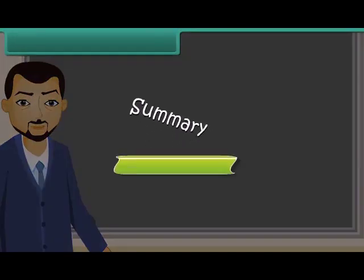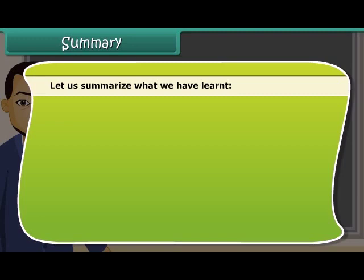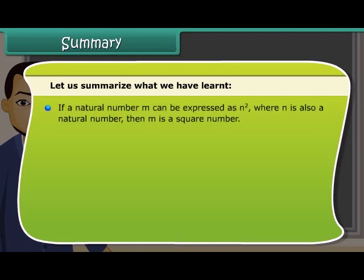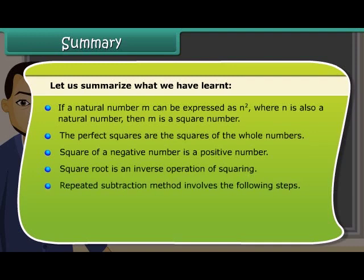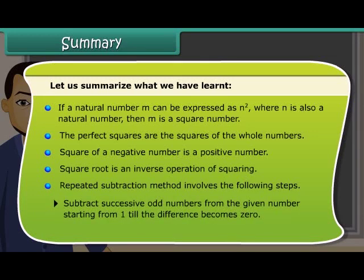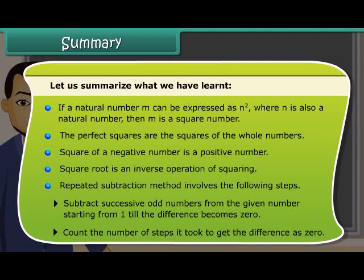Summary. Let us summarize what we have learned. If a natural number M can be expressed as N square, where N is also a natural number, then M is a square number. The perfect squares are the squares of the whole numbers. Square of a negative number is a positive number. Square root is an inverse operation of squaring. Repeated subtraction method involves the following steps: subtract successive odd numbers from the given number starting from 1 till the difference becomes 0. Count the number of steps it took to get the difference as 0.